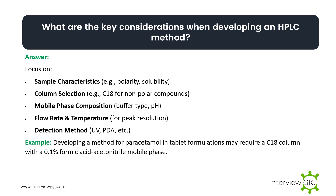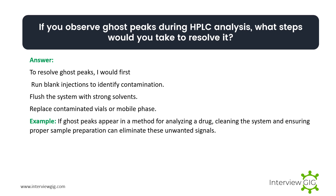What are the key considerations when developing an HPLC method? Focus on sample characteristics, column selection, mobile phase composition, flow rate and temperature, and detection method. Example: developing a method for paracetamol in tablet formulations may require a C18 column with a 0.1% formic acid/acetonitrile mobile phase.